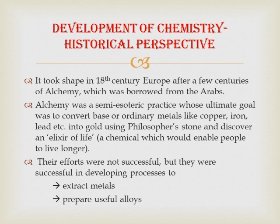They could also prepare useful alloys. Alloys are metals prepared by mixing two different types of metals. For example, bronze — which you know from gold, silver, and bronze medals — is actually an alloy. Bronze is made up of two metals: copper and tin. Copper and tin are mixed together to make bronze.